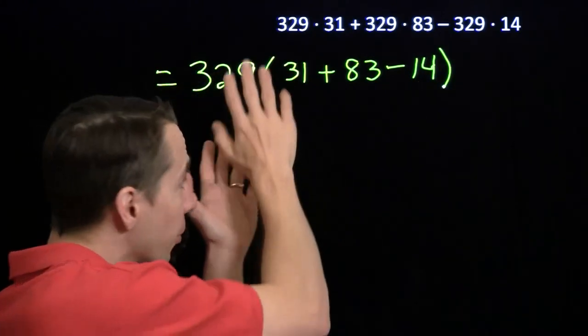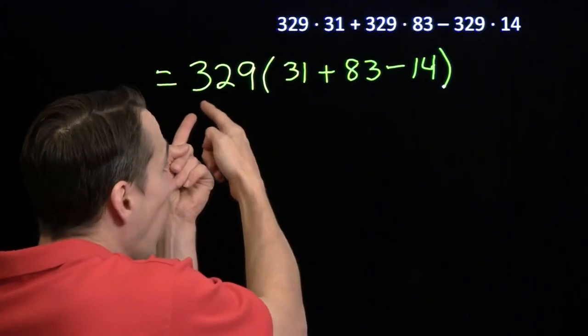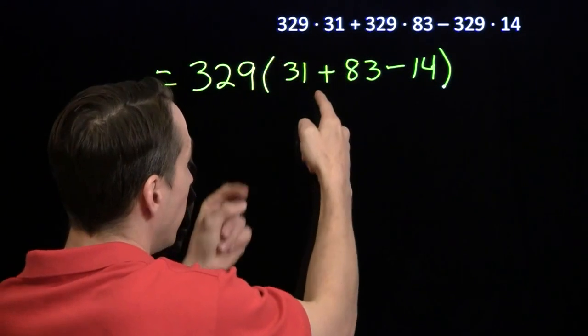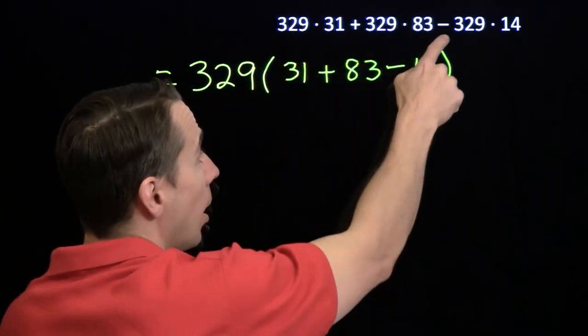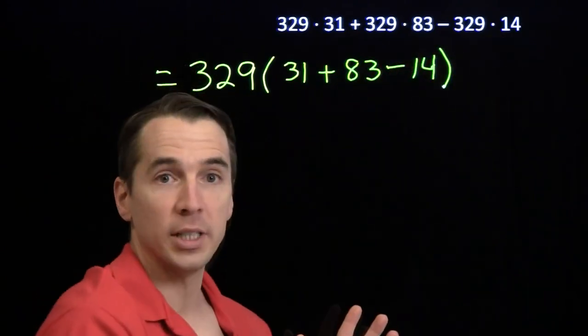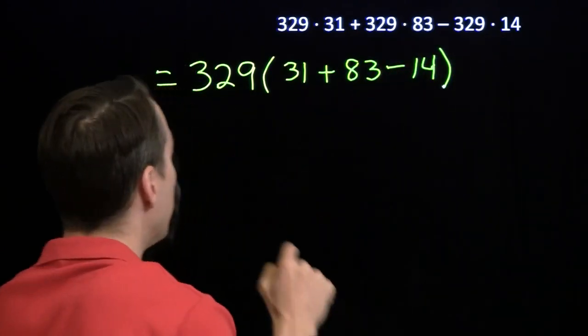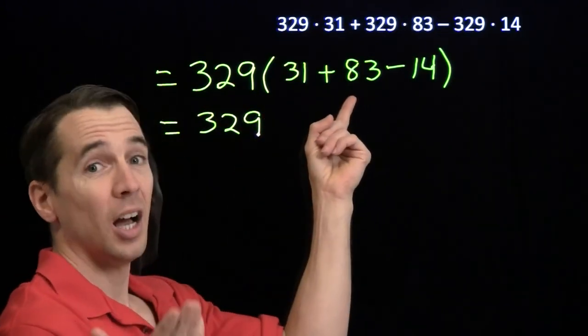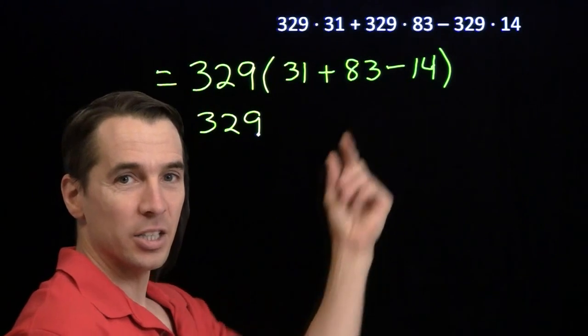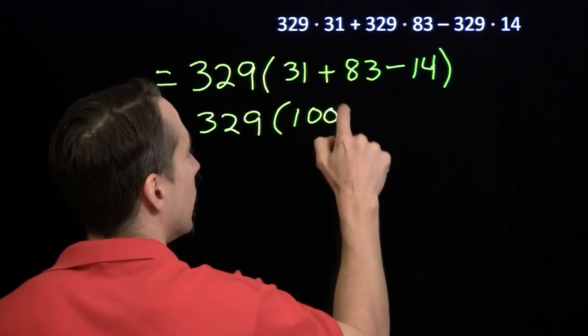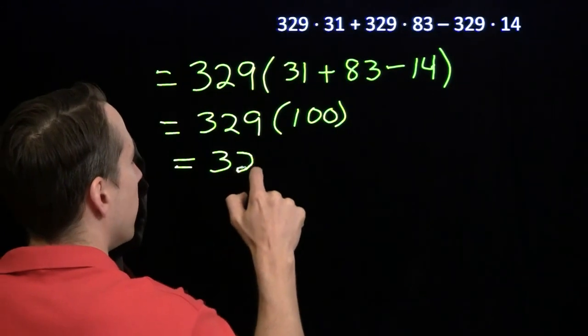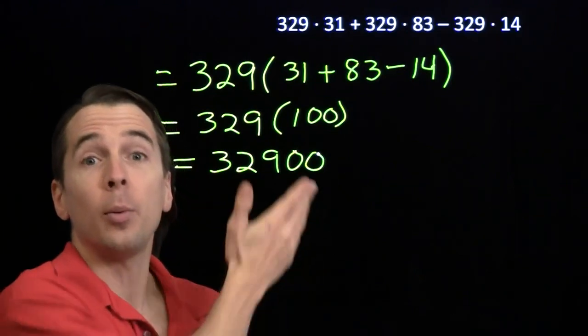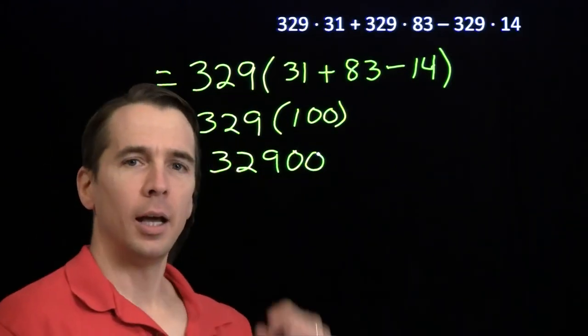And I can check myself here. Before I go on, I'm going to check and make sure I did this right. What happens if I multiply this out with the distributive property? I'll get 329 times 31 plus 329 times 83 minus 329 times 14. So I factored out the 329 correctly. Now let's see if it helps me. 31 plus 83, 114 minus 14, that's 100. And my laziness has paid off. I got the answer nice and easy, faster than you probably could have with your calculator, just by thinking a little bit.